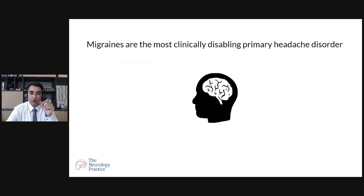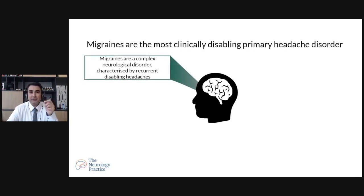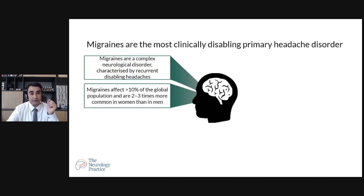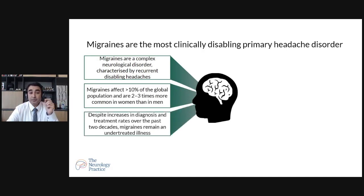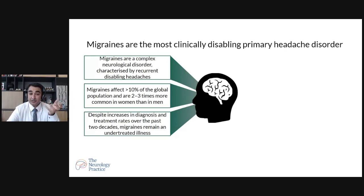Migraine is the most common primary headache causing disability — people cannot function and quality of life goes down, including efficiency at work. It is a complex neurological disorder characterized by recurrent disabling headaches affecting more than 10% of the global population, with females more affected. Despite increasing diagnosis and treatment advances over the past 10 to 12 years, migraine remains an underrated and undertreated illness. Many people still prefer over-the-counter painkillers rather than seeing a specialist who would address the root cause — the chemical imbalance.